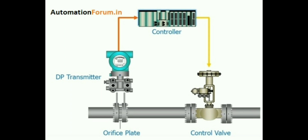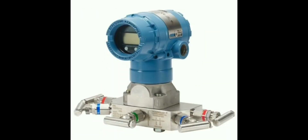Let us look at the applications. DP flow transmitters are widely used in industries such as oil and gas, chemical processing, water and wastewater treatment, power generation, and HVAC systems for measuring the flow of liquids, gas, and steam in pipelines. Common applications include flow measurements in process pipelines, custody transfer applications, boiler feed water systems, and flow control in industrial processes.